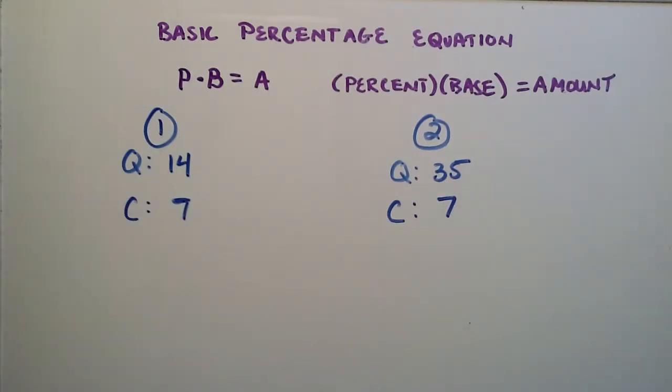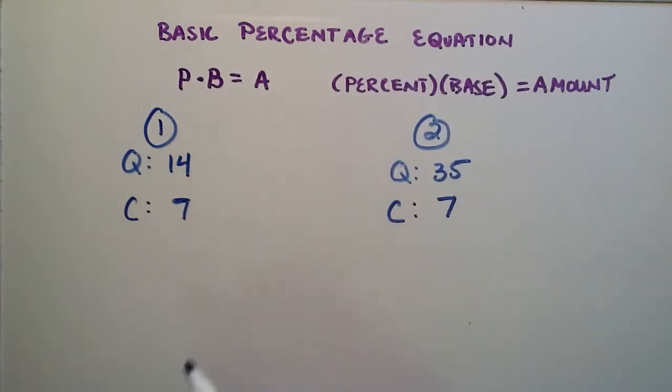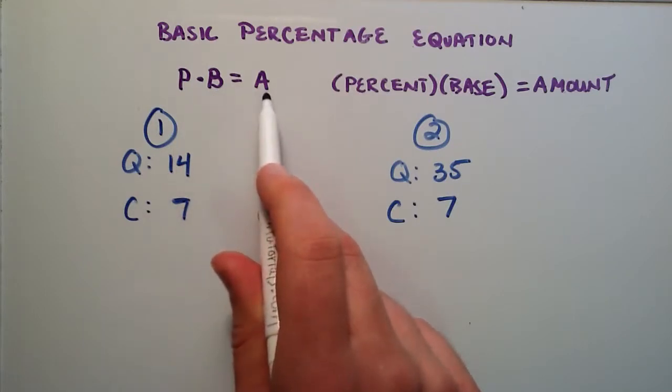So what I want to ask is what percentage of each homework assignment is complete? We can use the basic percentage equation to determine the answer. We just need to figure out what our percent is, what our base is, and what our amount is. Then we'll just use some simple algebra to solve.